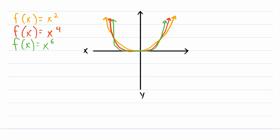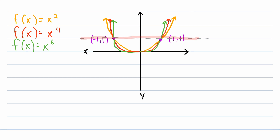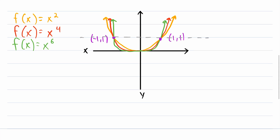Something interesting you might notice is that all of these power functions with coefficients of positive 1 and positive even exponents intersect at two points: the points (1, 1) and (-1, 1). Another interesting thing is that below these two points, the functions with the greater positive even exponents are below the functions with smaller positive even exponents. However, above these two points, the functions with the greater positive even exponents are above those with smaller positive even exponents. I encourage you to think about why these things are true.